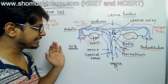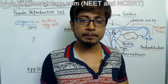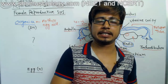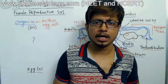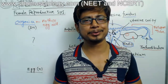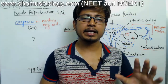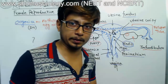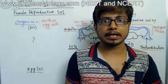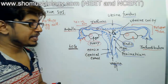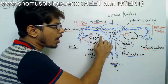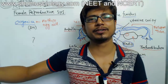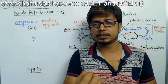The menstrual cycle plays a very important role in preparing the female body to receive sperm and allow fertilization. Once a female reaches puberty, she can produce a mature ovum and is considered fertile. Every month, the uterus and uterine wall prepare themselves over approximately 14 days to receive sperm.